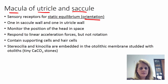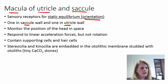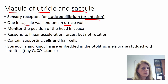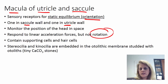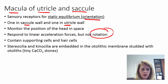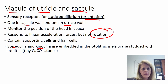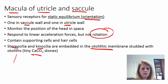You have one grouping of receptors in the saccule wall and one group in the utricle wall. These allow you to monitor the position of your head in space. They respond to linear forces — like moving forward and back — but not rotation. They contain hair cells, just like gustatory hair cells. These stereocilia and kinocilia are embedded in an otolithic membrane that has little otoliths, which literally means ear rocks — oto means ear, lith means rock — made up of calcium carbonate. So you have these little ear rocks inside the utricle and saccule.